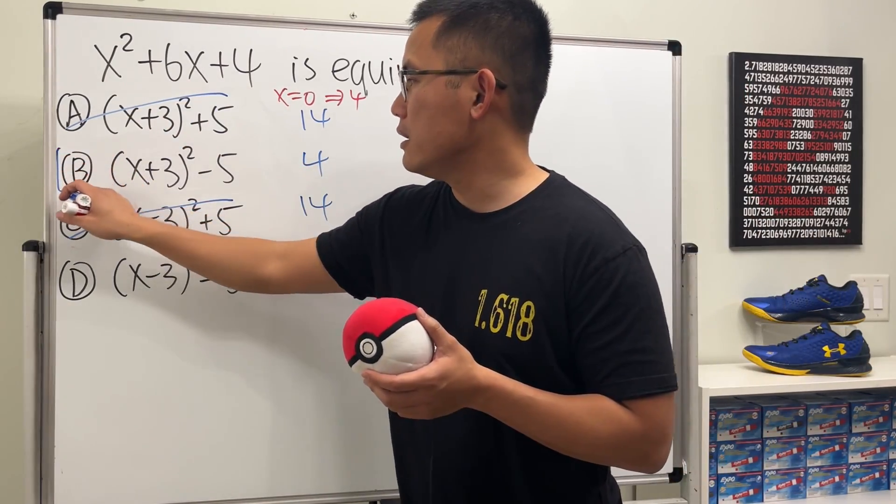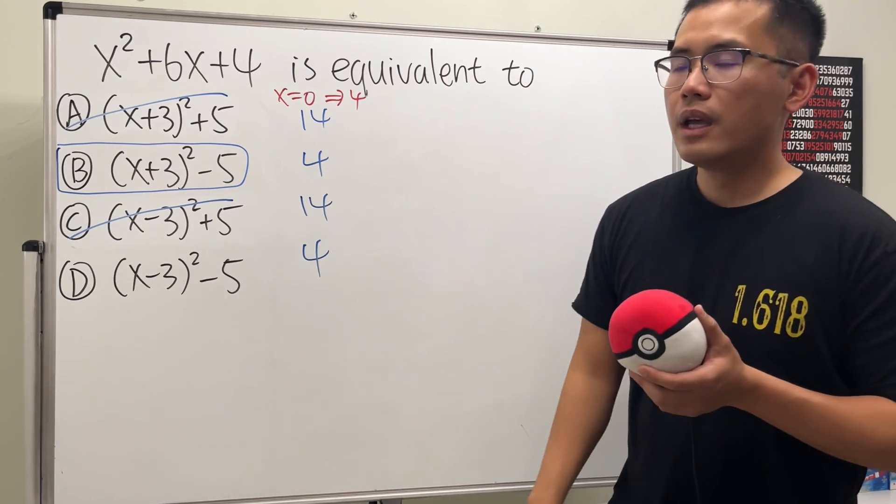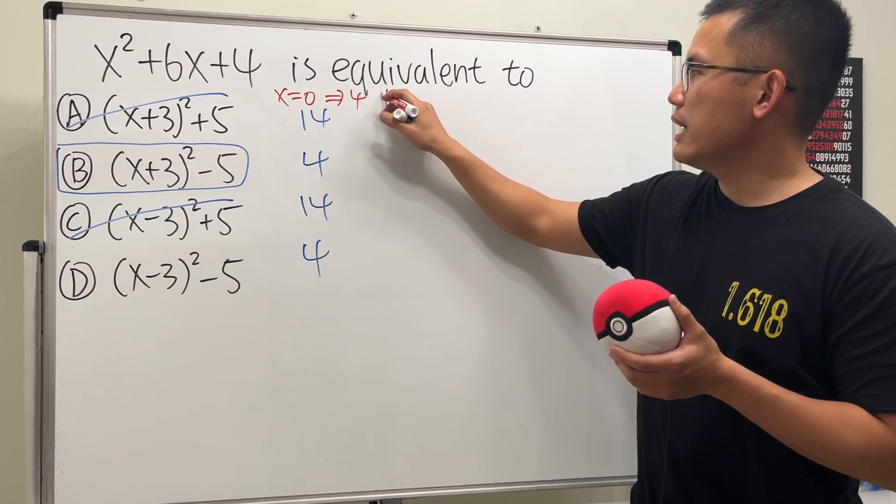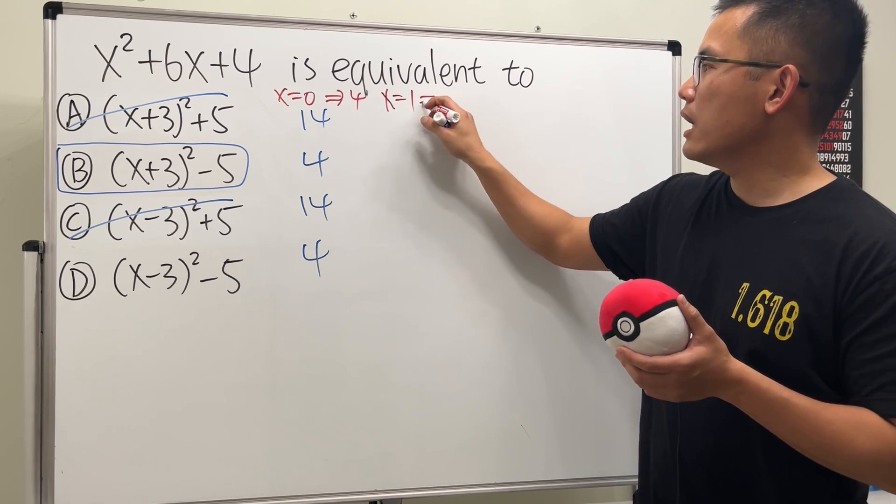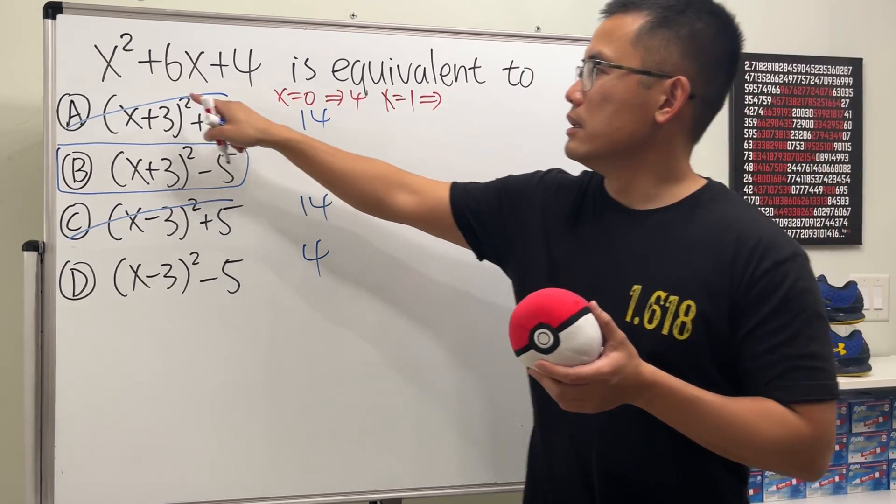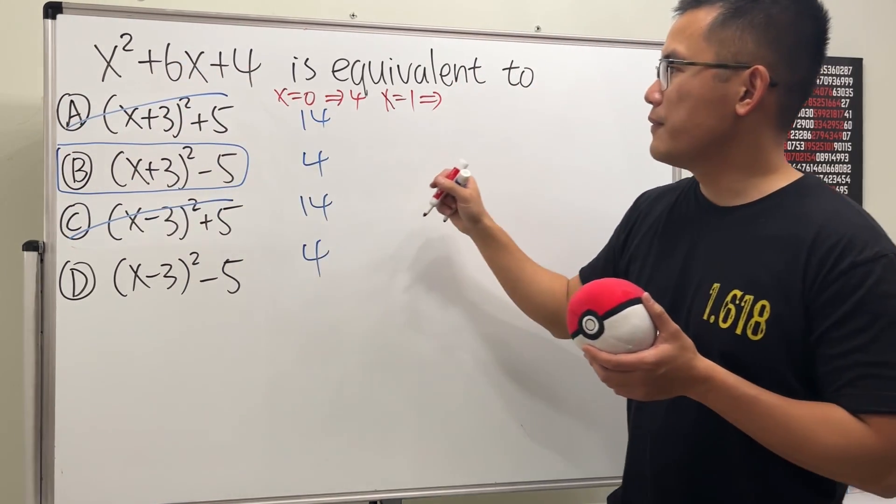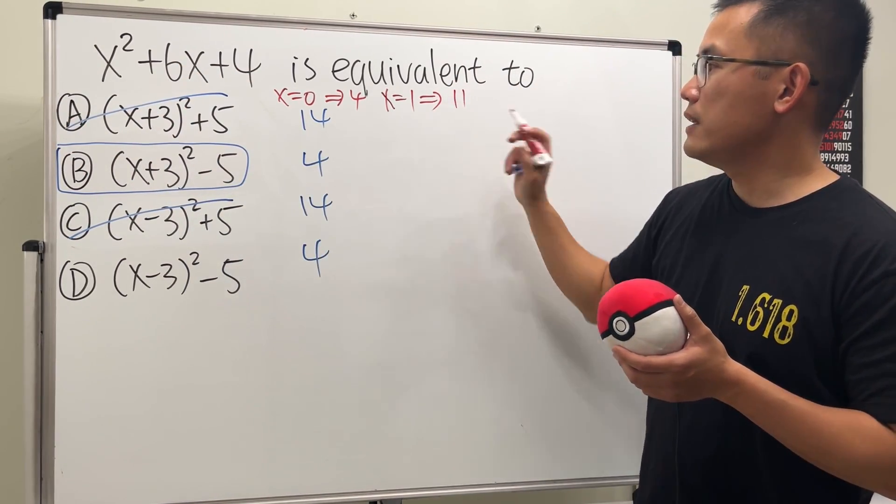Because we have a plus right here. But let me just confirm that with you guys. Let's say I want to let x equal to 1. In that case, if 1 is for x, then this will be 1. Plus 6 is 7. 7 plus 4 is 11. Then we should give 11.